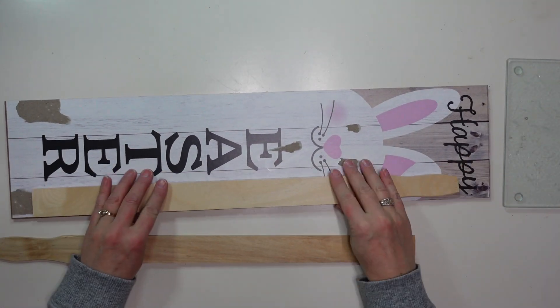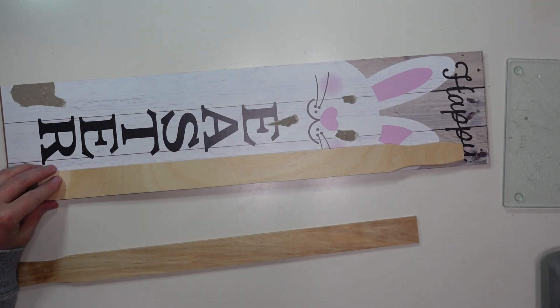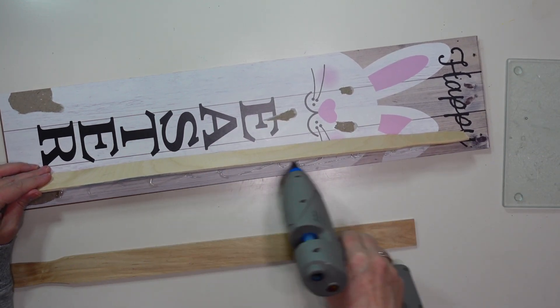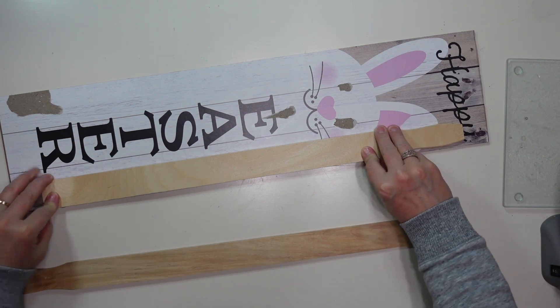Next I'm going to glue my paint stir sticks on what's the front of this sign that's going to be the back of my sign and I am using some gorilla hot glue. I would also recommend adding a little bit of E6000 just to give this a stronger hold.